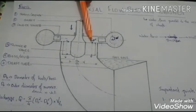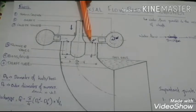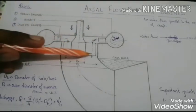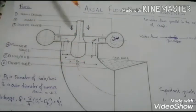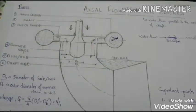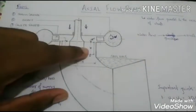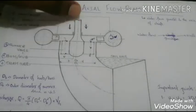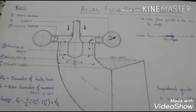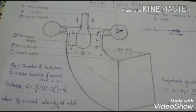So if we consider this as the inlet point where the water flows into the runner vanes and this as the outlet point, here we can see the water flows in a direction parallel to the rotation of axis of the turbine shaft. So that's how it works.